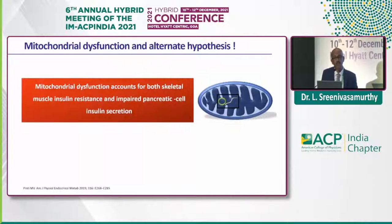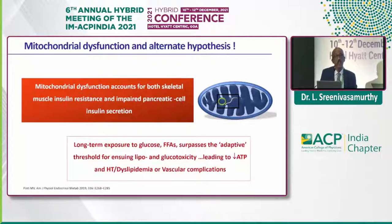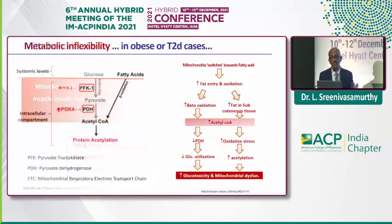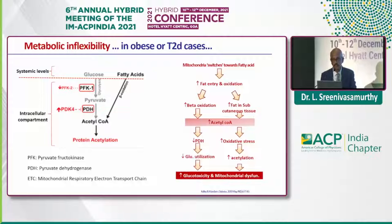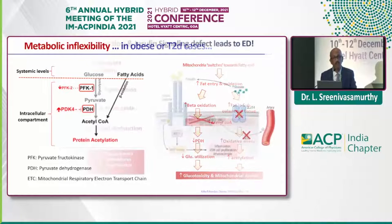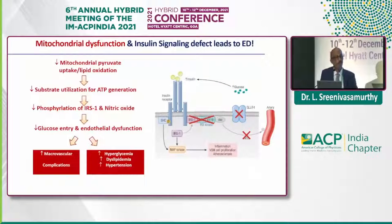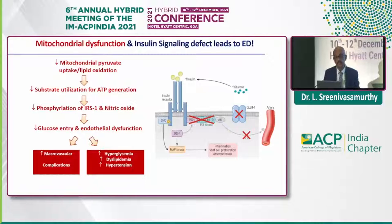The alternative hypothesis we are talking about is mitochondrial dysfunction, where both in skeletal muscle and at the pancreatic level there is defective insulin secretion. Long-term exposure of glucose and free fatty acids surpasses the adaptive threshold, ensuing lipo- and glucotoxicity and eventually resulting in vascular complications. Increased fatty acid oxidation results in increased acetyl-CoA, oxidative stress, and acetylation, eventually causing glucotoxicity. This phosphorylation results in increased nitric oxide production and eventually macro- and microvascular complications — including erectile dysfunction, which we see as one of the microvascular complications in diabetes.